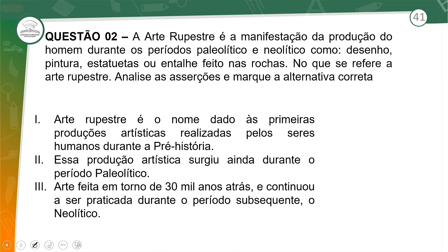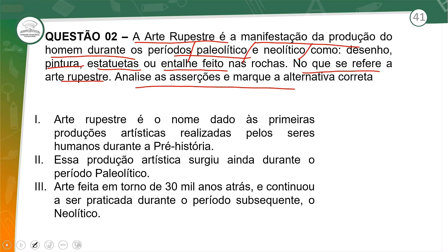Questão dois. A arte rupestre é a manifestação da produção do homem durante os períodos paleolítico e neolítico, como desenho, pintura, entalho. No que se refere à arte rupestre, analise as asserções e marque a alternativa correta. Arte rupestre é o nome dado às primeiras produções artísticas realizadas pelos seres humanos durante a pré-história — está correto.